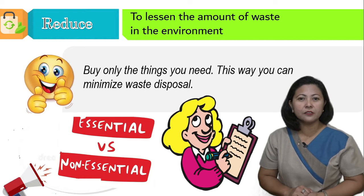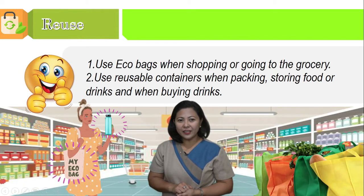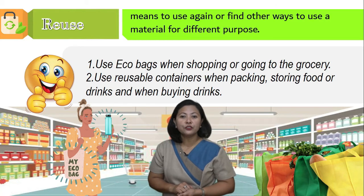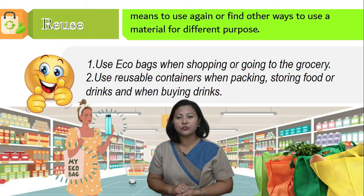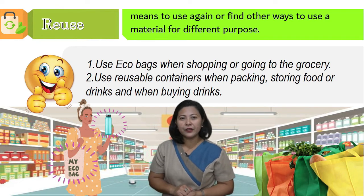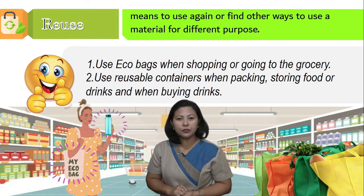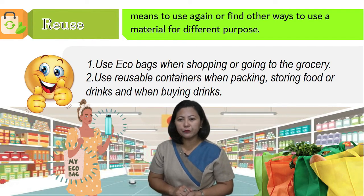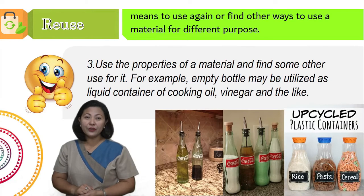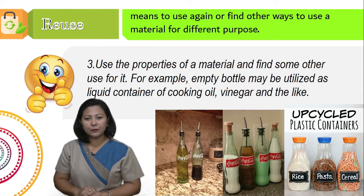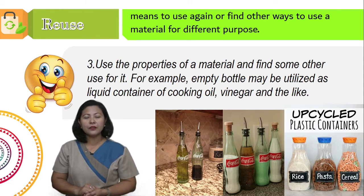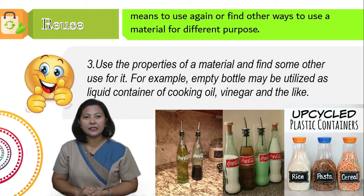The next R is reuse. It means to use again or find other ways to use a material for a different purpose. For example, use eco bags when shopping or going to the grocery. Second, use reusable containers when packing or storing food or drinks. Third, use the properties of a material and find some other use for it — for example, an empty bottle may be utilized as a liquid container for cooking oil, vinegar, and the like.